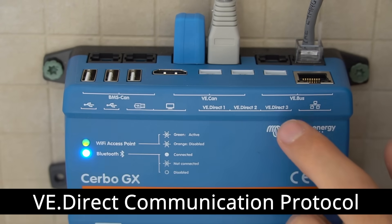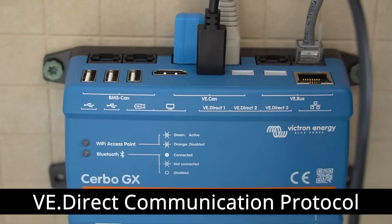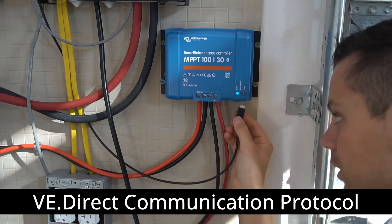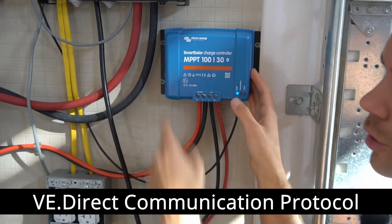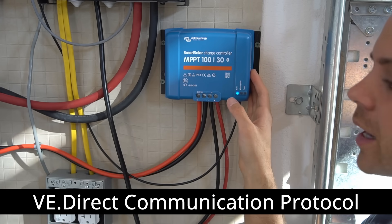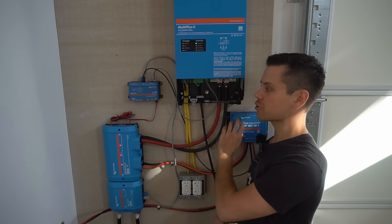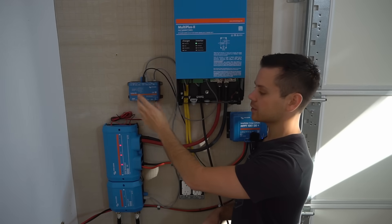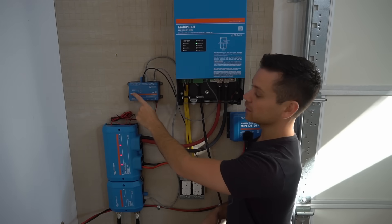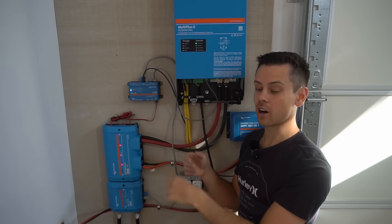So on the Cerbo GX, we have VE direct one, two, and three. So we're just going to plug it in to one, just like that. And then the other end of the cable plugs in right here, just like that. And now the solar charge controller is communicating with the Cerbo GX. You don't have to set anything up. Now we have the shunt solar charge controller and inverter connected to the Cerbo GX. And the Cerbo GX is connected to the battery and the lights are on. So now we can connect the screen and monitor our system.